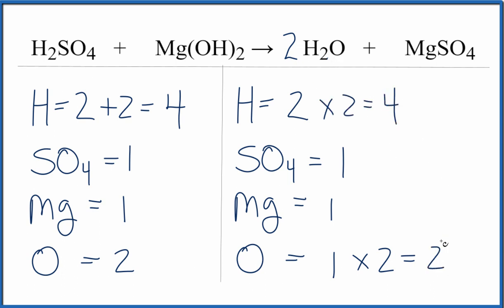...that equals four, and that means that this equation is balanced. We have the same number of each type of atom on each side of the equation. The trick here is if you have this SO4 here and you have SO4 here, you can just count them as one thing, and that makes the balancing a lot easier.